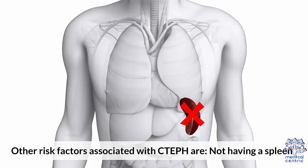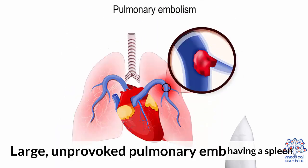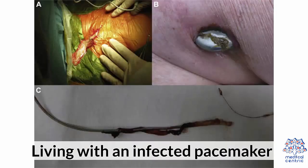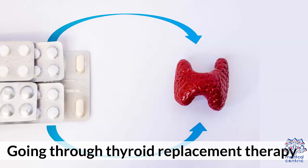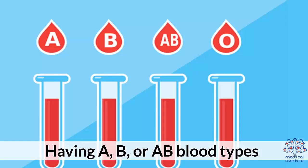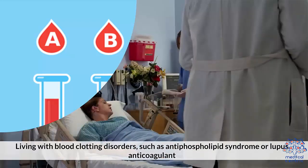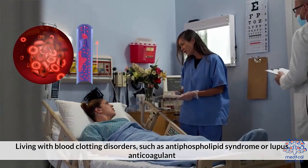Other risk factors associated with CTEPH are: 1. Not having a spleen. 2. Large, unprovoked pulmonary embolisms. 3. Living with an infected pacemaker. 4. Going through thyroid replacement therapy. 5. Having A, B, or AB blood types. 6. Living with blood clotting disorders, such as antiphospholipid syndrome or lupus anticoagulant.